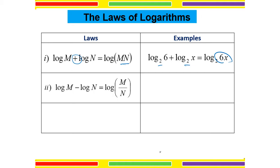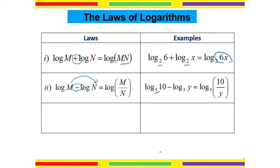The second law is division: log M minus log N equals log of M divided by N. We have subtraction, so we divide the values inside. For example, log base 5 of 10 minus log base 5 of Y — make sure we have the same base first, both are base 5 — so we get log base 5 of 10 over Y.